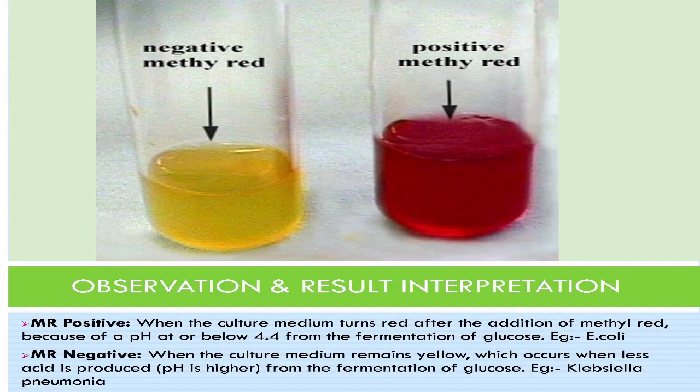Result interpretation: MR positive — the culture medium turns red upon addition of methyl red, indicating a pH at or below 4.5 from glucose fermentation; example is E. coli. MR negative — the culture medium remains yellow, which occurs when less acid is produced and the pH is higher from glucose fermentation; example is Klebsiella pneumoniae.